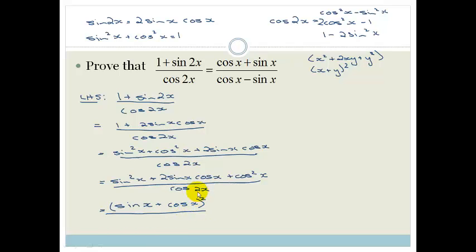Now let's look at our cos 2x. So obviously our answer wants a cos x and a sin x in it, so I'm going to use this one here. I'm going to choose the top one. So I'm going to change that to cos squared x minus sin squared x.